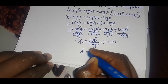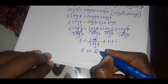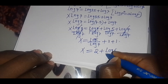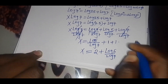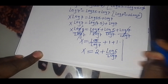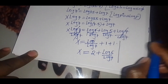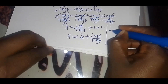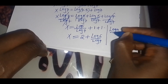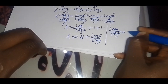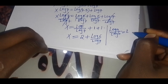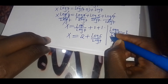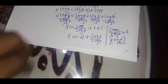So that means x is equal to 2 plus log(5)/log(7). Applying the change of base identity that log(a)/log(b) can be expressed as log base b of a, we apply this identity.